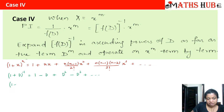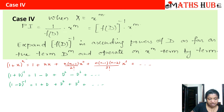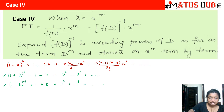Similarly, (1 − D)^(−1) gives 1 + D + D² + D³ + …, since all signs become positive. These are the most frequently required expansions. Otherwise, use the general binomial term and substitute any required value of n.